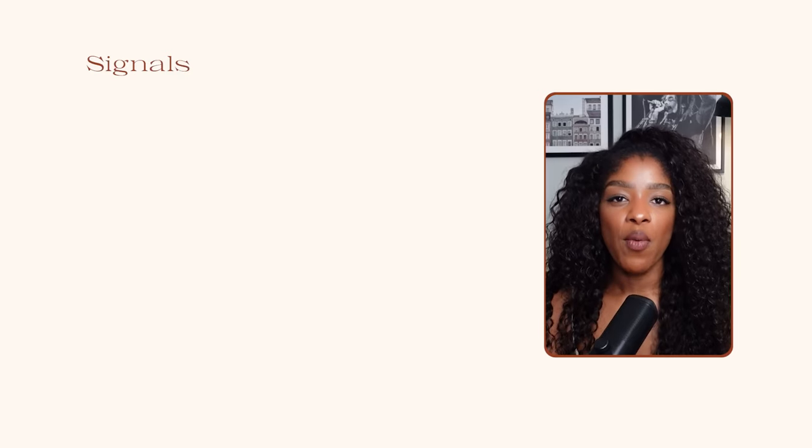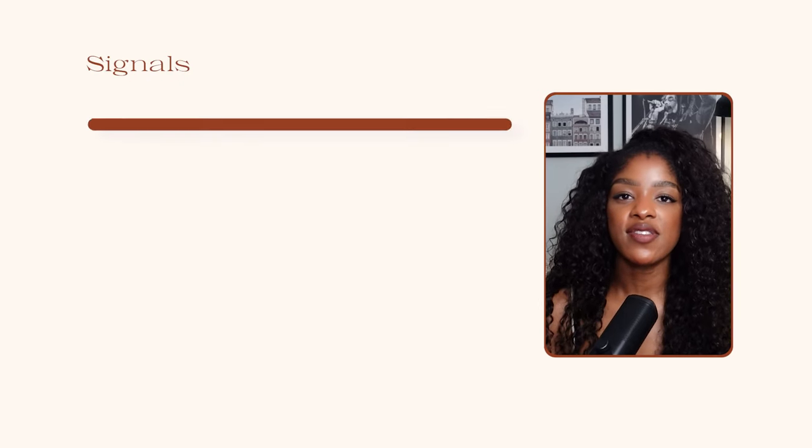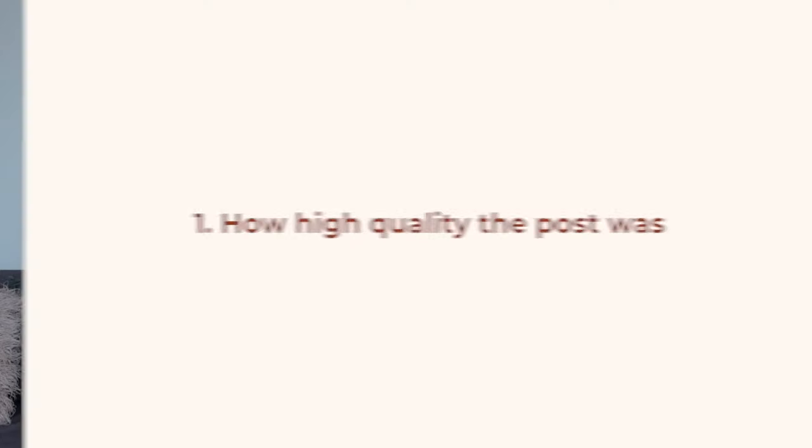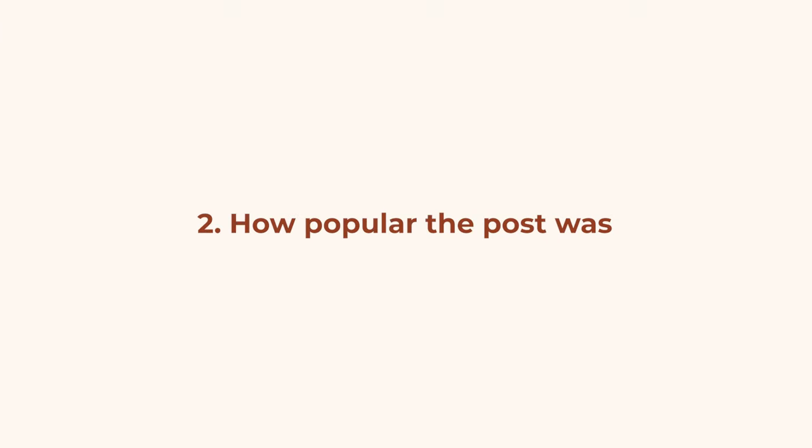So let's break down what those signals are. One of the most important signals is information about the creator's content — that post you just shared, the reel, the carousel, whatever it is. Instagram's algorithms will look at your post to figure out a few different things. For example, it will try and figure out how high quality the post was — if it's a video, is it clear? Does it take up the whole screen?